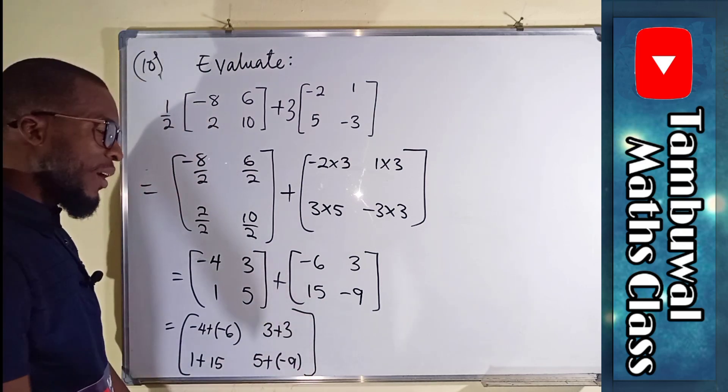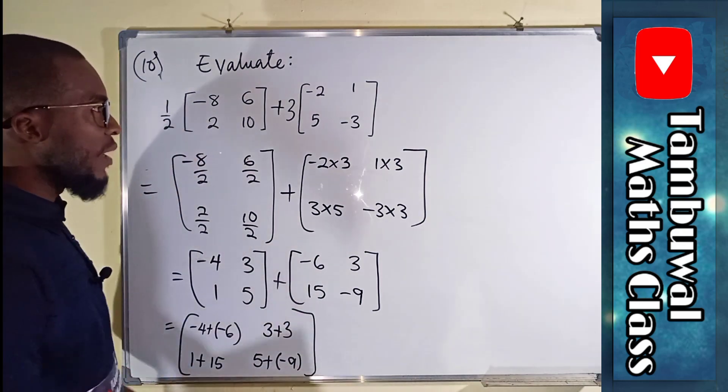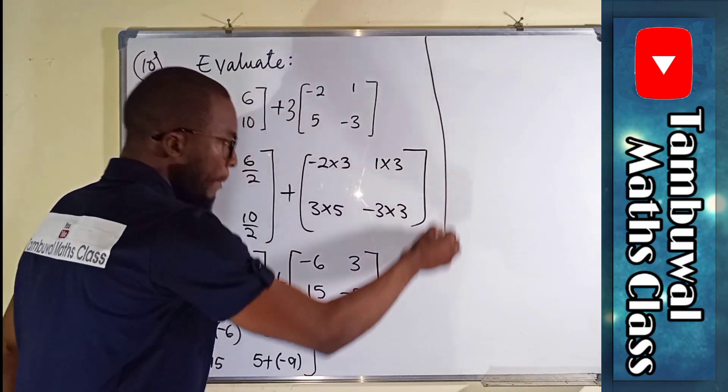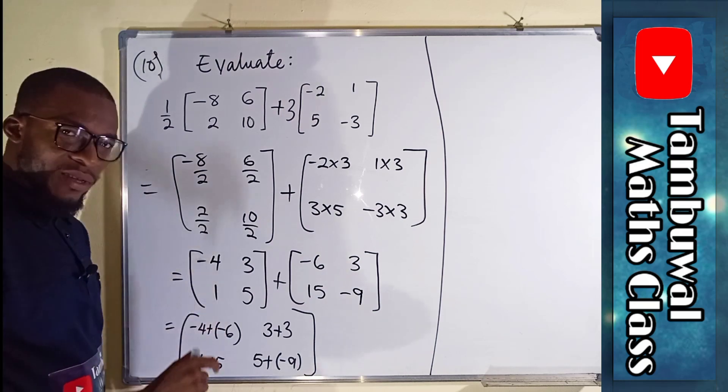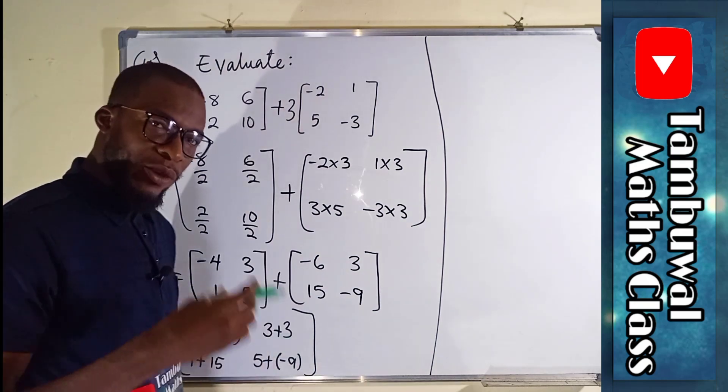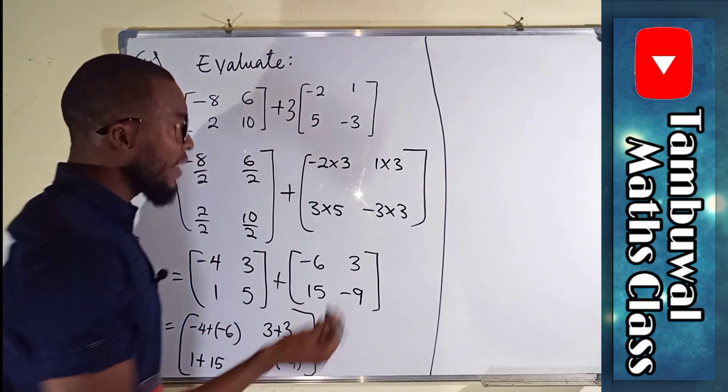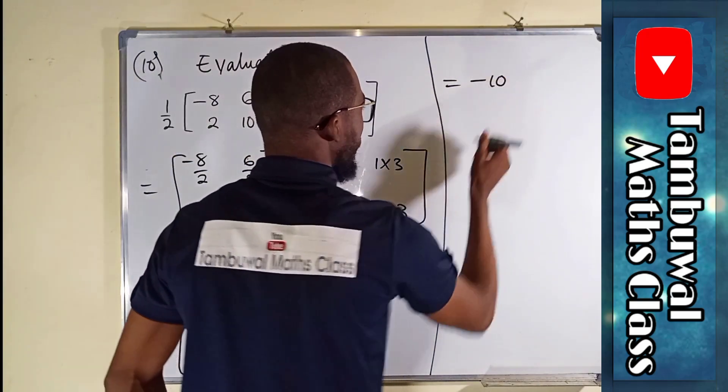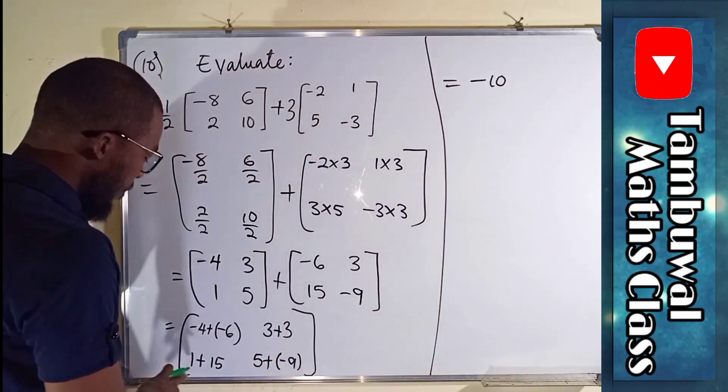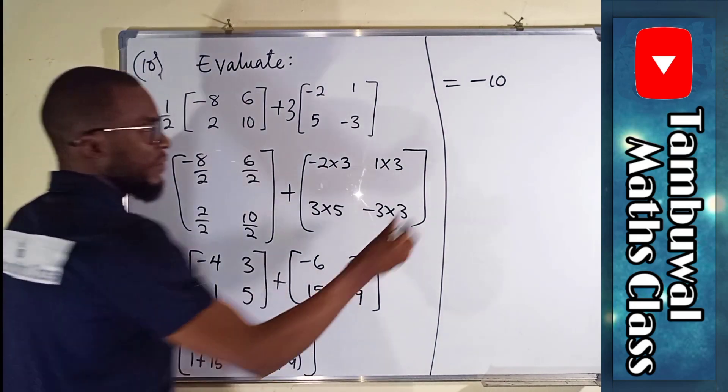We simplify and obtain our answer. Negative 4 plus negative 6 is just like saying negative 4 negative 6 which is negative 10. So we have negative 10 here. 1 plus 15 is 16. We have 16 here.